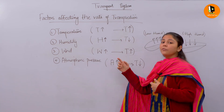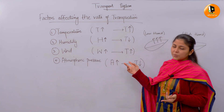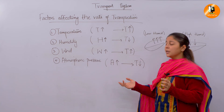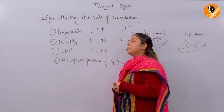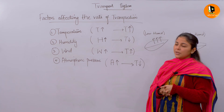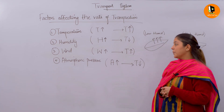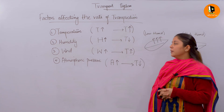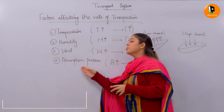When there is less wind, it will not favor more transpiration and conditions remain normal. So the third factor, wind, and transpiration rate are both directly proportional — both increase or decrease together.